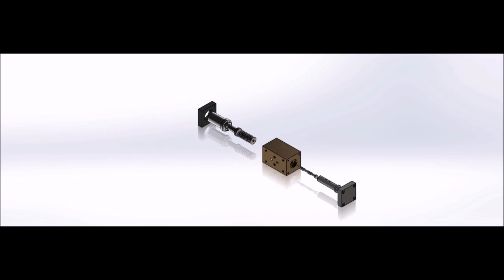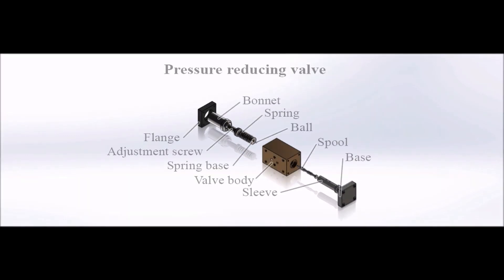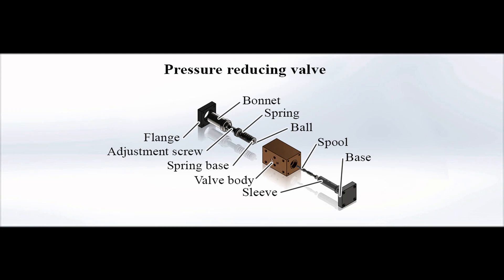The main elements of the pressure-reducing valve design are valve body, spool, sleeve, spring, spring base, ball, bonnet, adjustment screw, flange, and base.